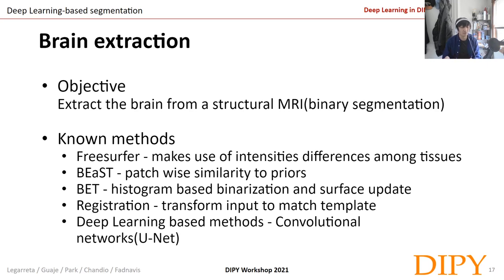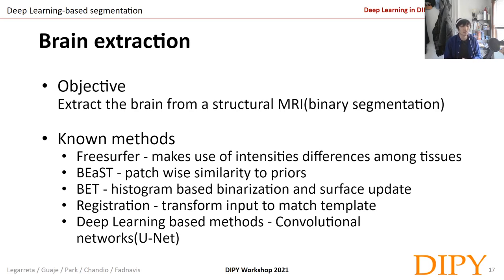BEASTS calculates the similarity between patches of the priors and patches of the data. BET first binarizes the image using a histogram-based method and then updates the surface through iterations from the prediction. Registration is kind of similar to BEASTS, but transforms the input to match the template. And then there are deep learning-based methods, where most of them use a U-Net type architecture.